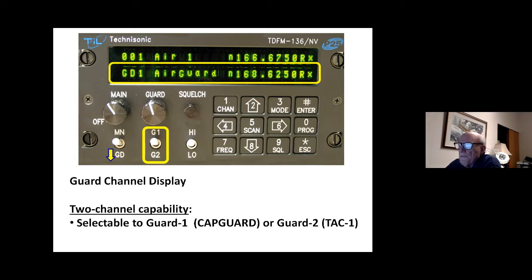The guard channel is on the bottom display. And there's two channels, guard one and guard two. Those of you that have flown with the Technosonics probably remember, but not everyone may, that G1, guard one, is the CAP guard channel. G2 is the TAC1 channel.